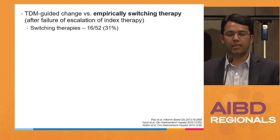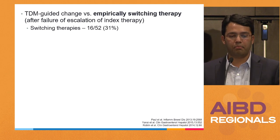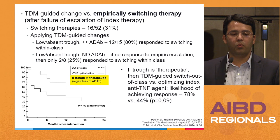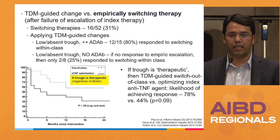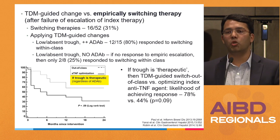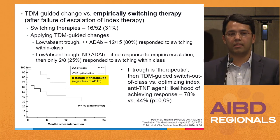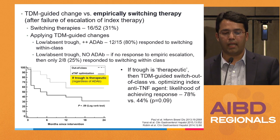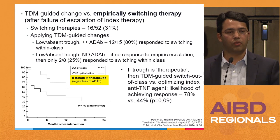Similarly, among those who didn't respond to escalation and were empirically switched, roughly 30% responded. But applying TDM-guided changes, people with immune-mediated clearance switched within class, and 80% of those responded. For people with adequate trough and no anti-drug antibodies, empirically switching within class was not beneficial — only about 2–25% of patients responded. Clearly, TDM data is useful to inform treatment decisions about whether to escalate or switch.